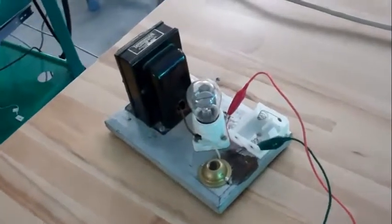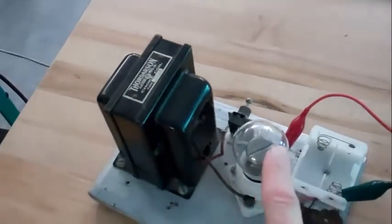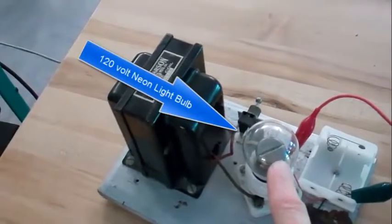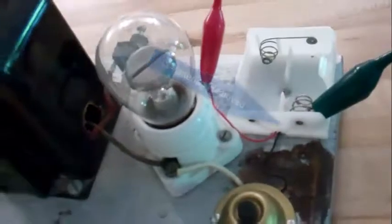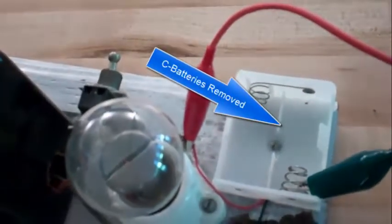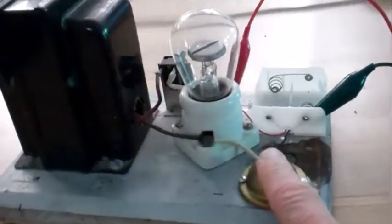Here we have a choke. It's a large inductor, a 120 volt neon light bulb, and place for two 1.5 volt DC batteries and a switch.